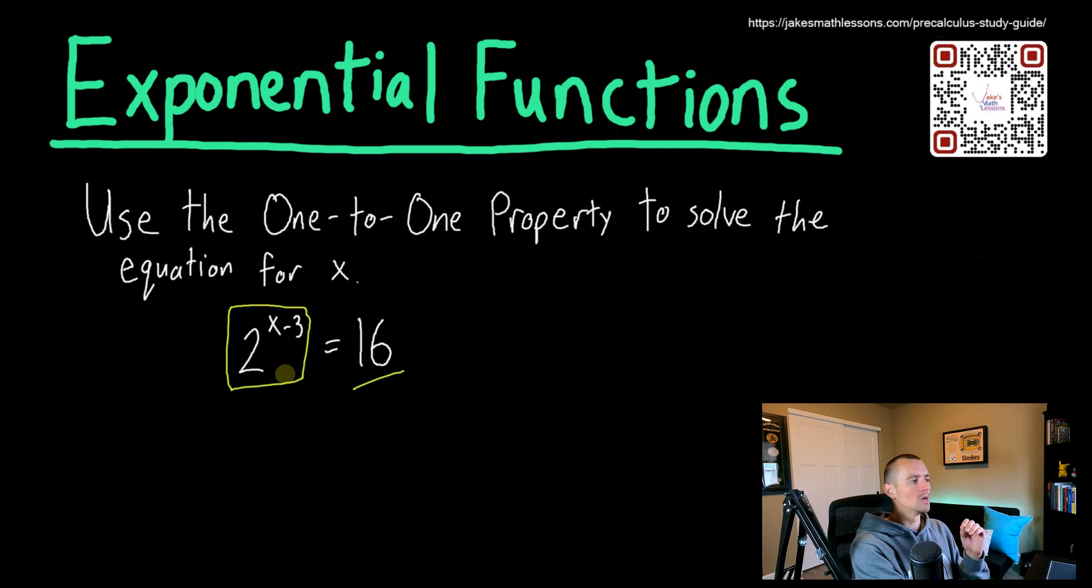Okay, so how we can actually use this one-to-one property is to say, okay, we have two raised up to some power x minus three on the left side of our equation. To use the one-to-one property, what we want to do is figure out how we can rewrite this right side of our equation, how we can rewrite 16 to be two raised up to some other power as well. So that's what you want to think about. How can you basically write both sides of your equation as the same base raised up to some other power?